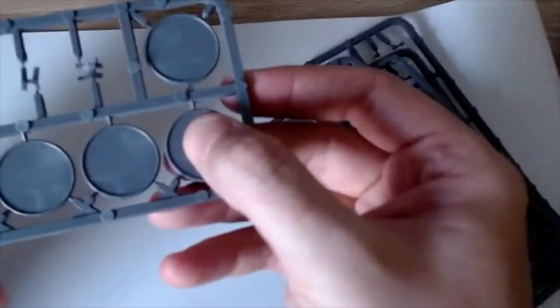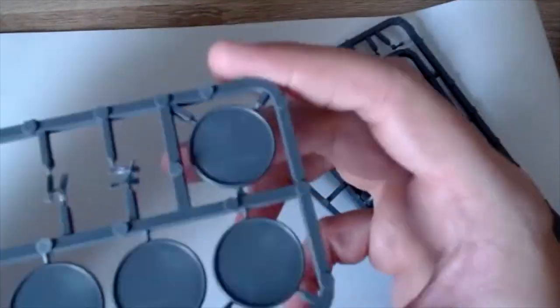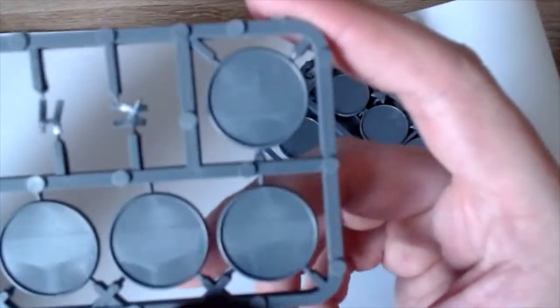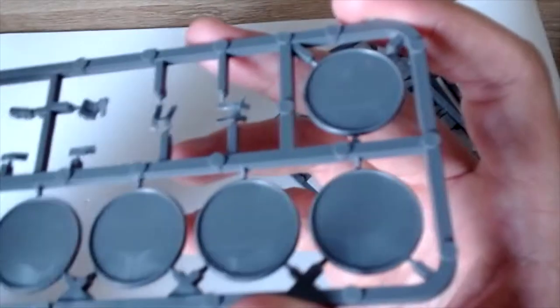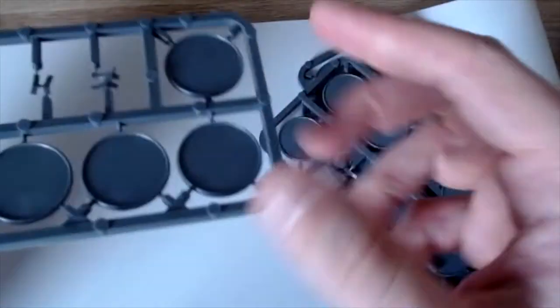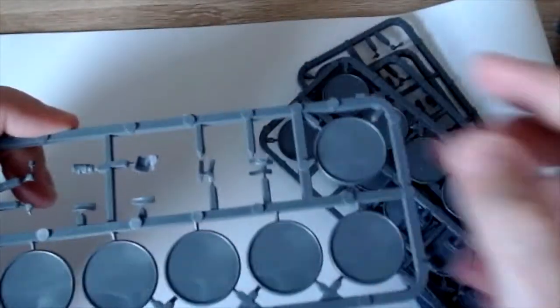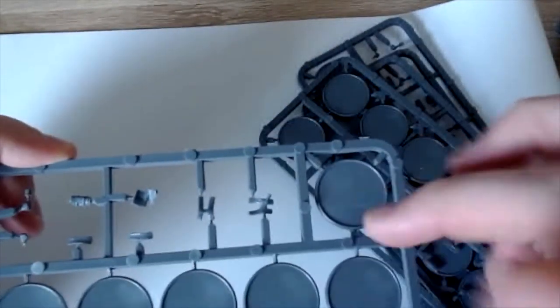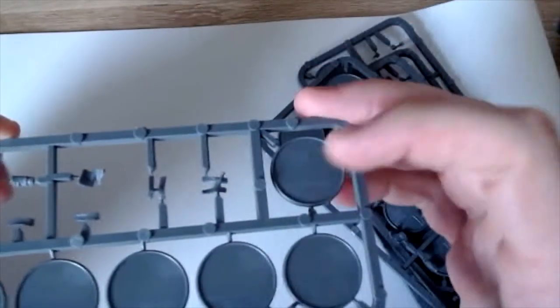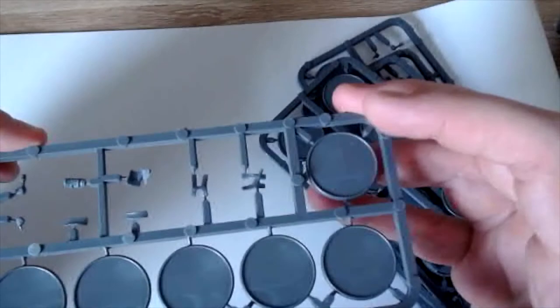One good thing I really do like about Warlord bases is that they've got this lip and it allows you then to apply some texture base without it looking too high up. It's a tiny smidgen lip but it works really well. Also, if you have metals that have come on a mold base, when you glue them on they almost go level with the lip.